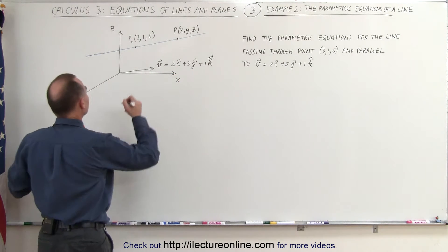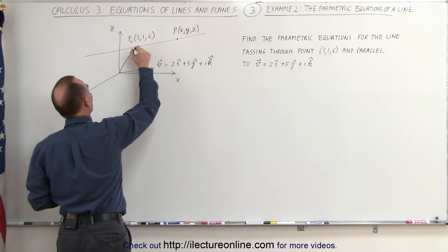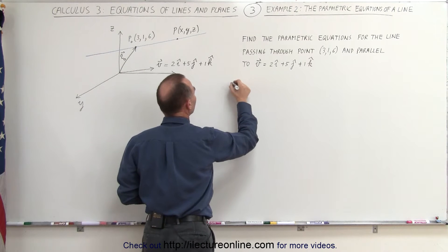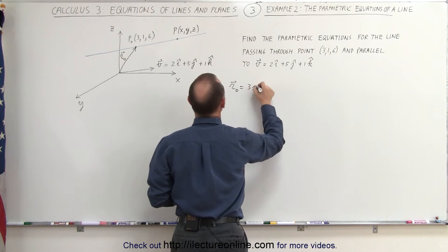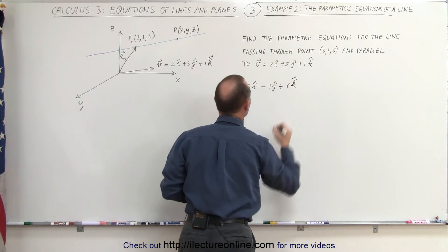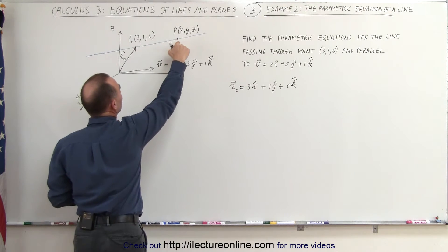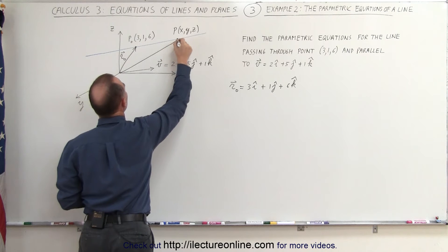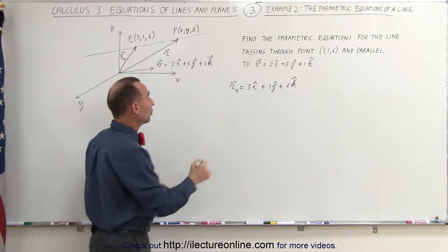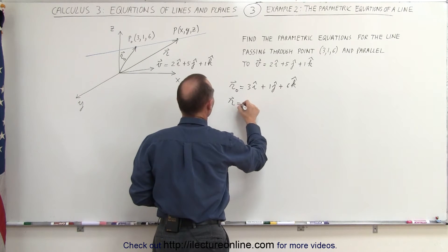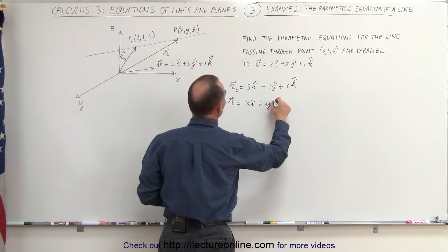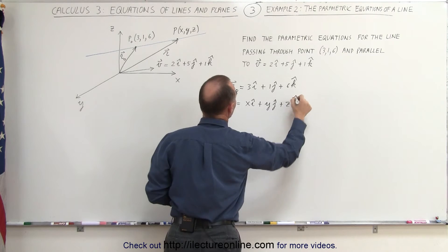First, what we do is we draw the position vector to the known point, and we'll call that the R-sub-zero vector. We have the vector to the unknown point, or to the arbitrary point P — we call that the R vector, the position vector to the arbitrary point. We can write the R vector as being equal to x in the i direction, plus y in the j direction, plus z in the k direction.